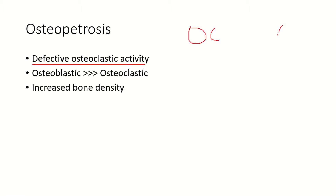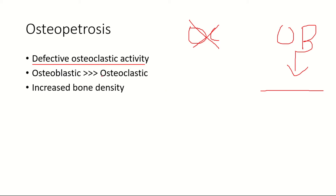The osteoblast cells are forming new bones. In osteopetrosis there is defective osteoclastic activity, which means the osteoclast cells cannot function. So it's only the osteoblast cells that are functioning, and there will be only deposition of bone. The osteoblastic activity will be much higher than the osteoclastic activity, resulting in increased bone density.